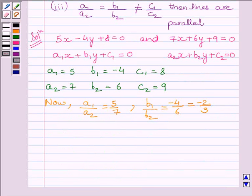And C1 upon C2 equals 8 upon 9. Now, we can see A1 upon A2 is not equal to B1 upon B2.